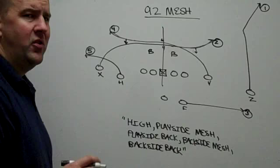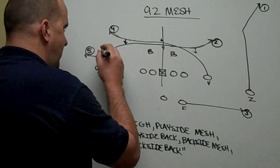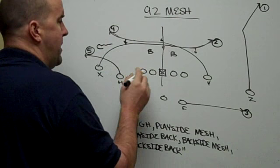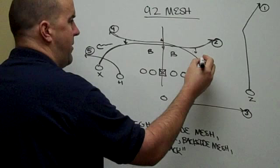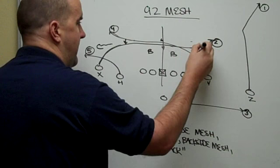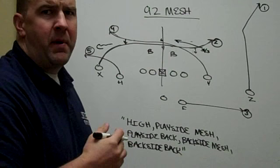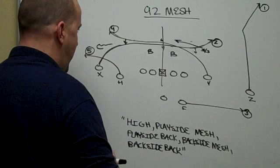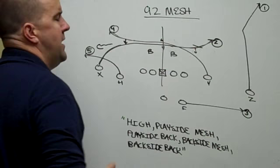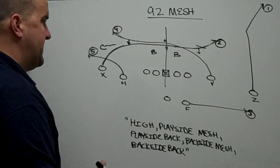Now, how do X and Y know if it's man or if it's zone? Well, if this X has a corner that's trailing him, X as he's running across will be able to look at Y. And if Y has, let's say, a strong safety that's running with him, X will be able to see that Y has a man covering him, and so he will know that this is man coverage. If you're in doubt as you run your mesh, look across and see if there's someone trailing the mesh receiver that's coming opposite of you. And again, it's important to sit down in grass.